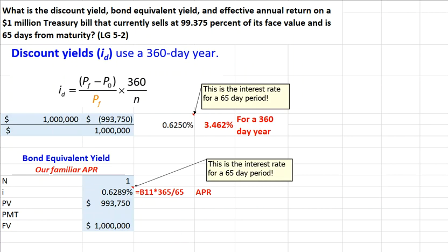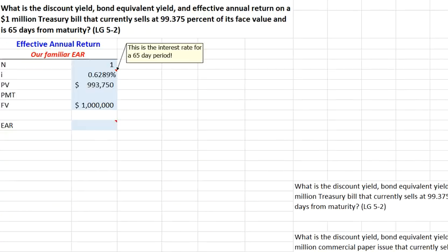Next, let's look at the effective annual return. Let's calculate our effective annual return. That's our simple, familiar EAR, and we can do it easily with our calculator, or we can use our good old-fashioned formula. First thing we do with our financial calculator is the Treasury bond is going to be worth a million at maturity. It costs us $993,750.